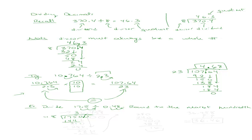So 48 goes into 175 a total of 3 times, and I get a remainder of 31. Bring down the zero. 48 goes into 310 — actually, let me redo this. Starting from 1715 divided by 48: 48 goes into 175 three times, giving 144, remainder 31. Bring down the next digit. Then when I multiply by 6, I get 288. Subtracting gives 22. I can then bring down the next zero. Notice where the decimal point is — my quotient is going to have a decimal point there as well.